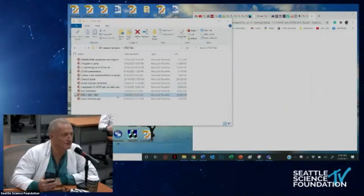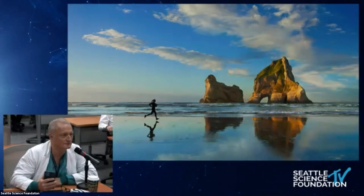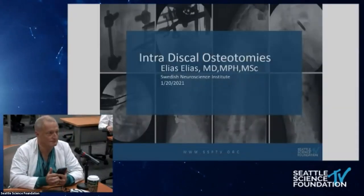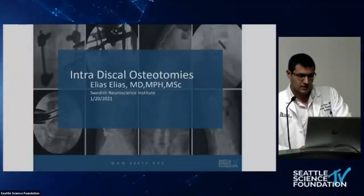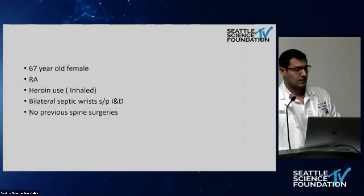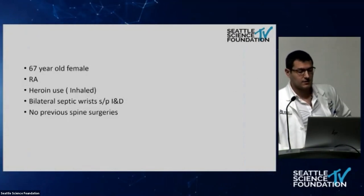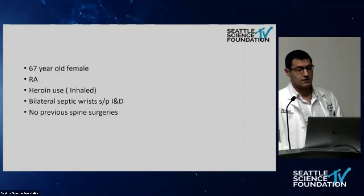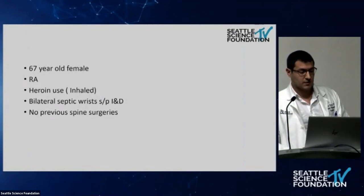The second case was performed by both Dr. Hart and Dr. Skoujen. This is a 67-year-old female with rheumatoid arthritis. She's an IV drug user but reports she only inhales heroin, never injected. History of bilateral septic wrists, treated with IVND. She still has a virgin spine with no previous spine surgeries.